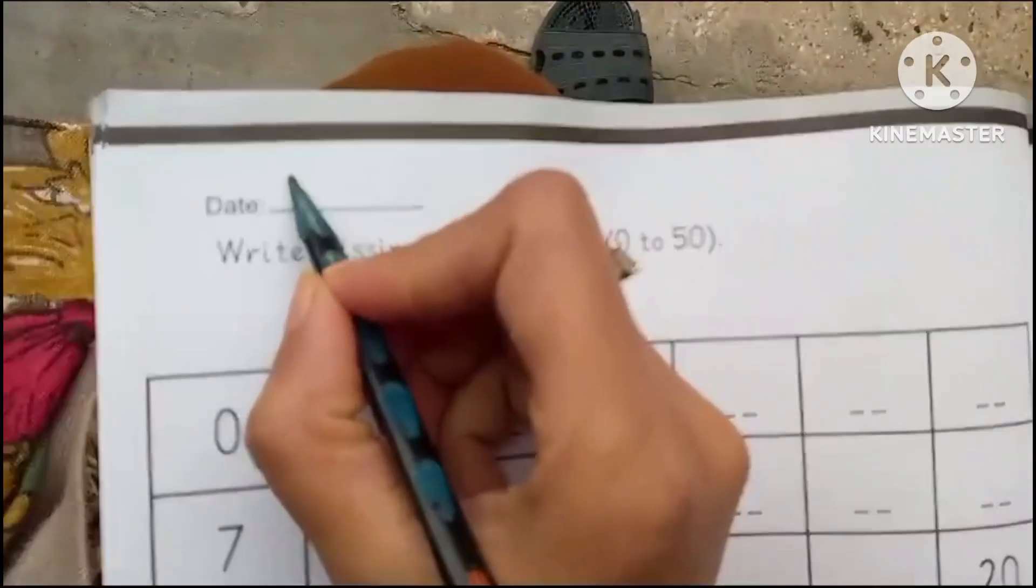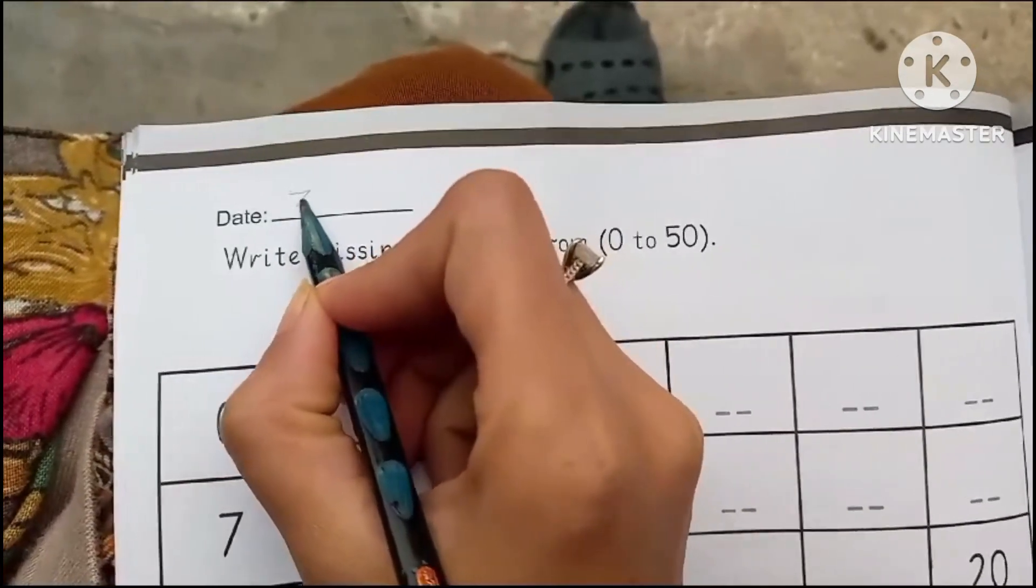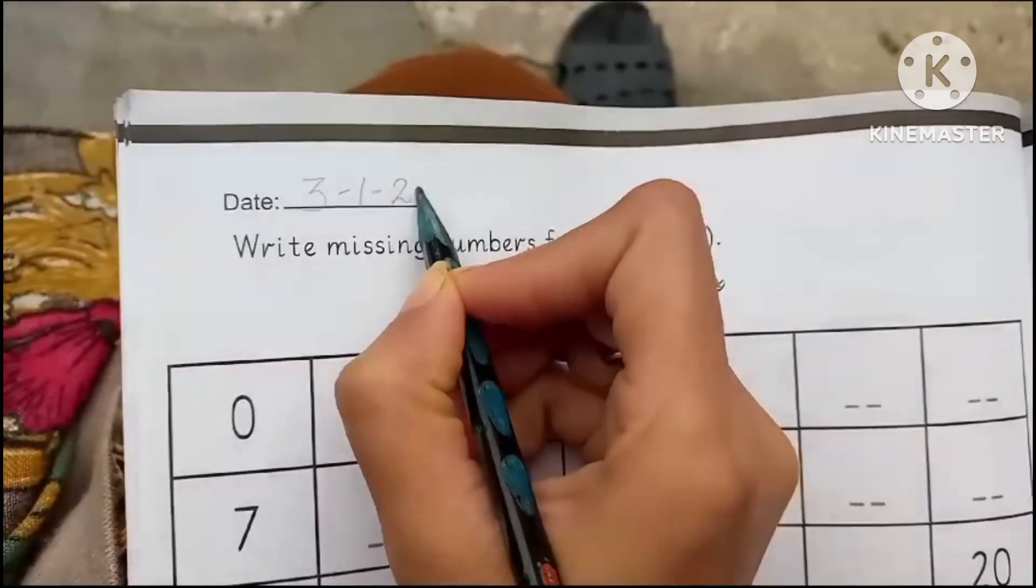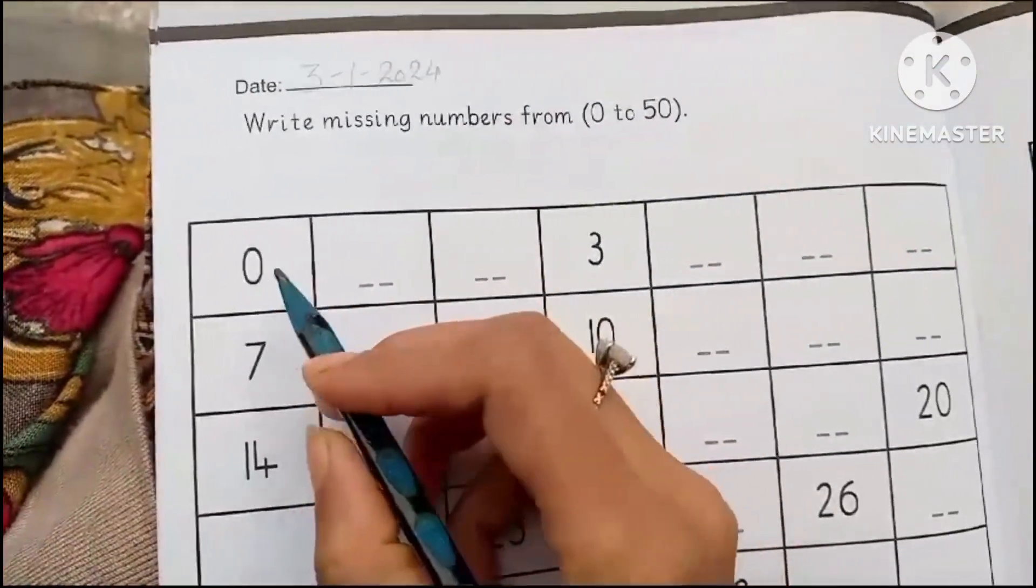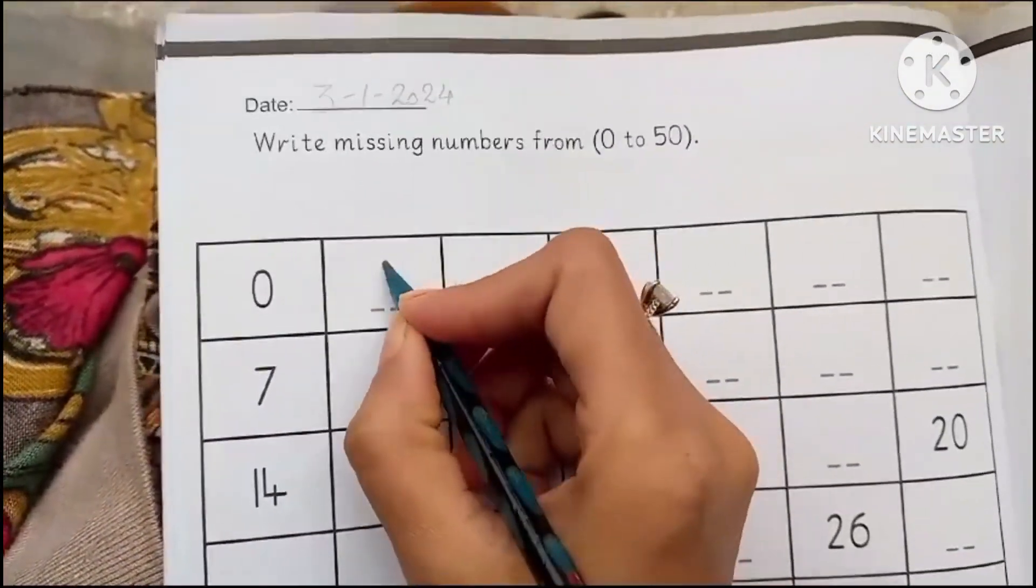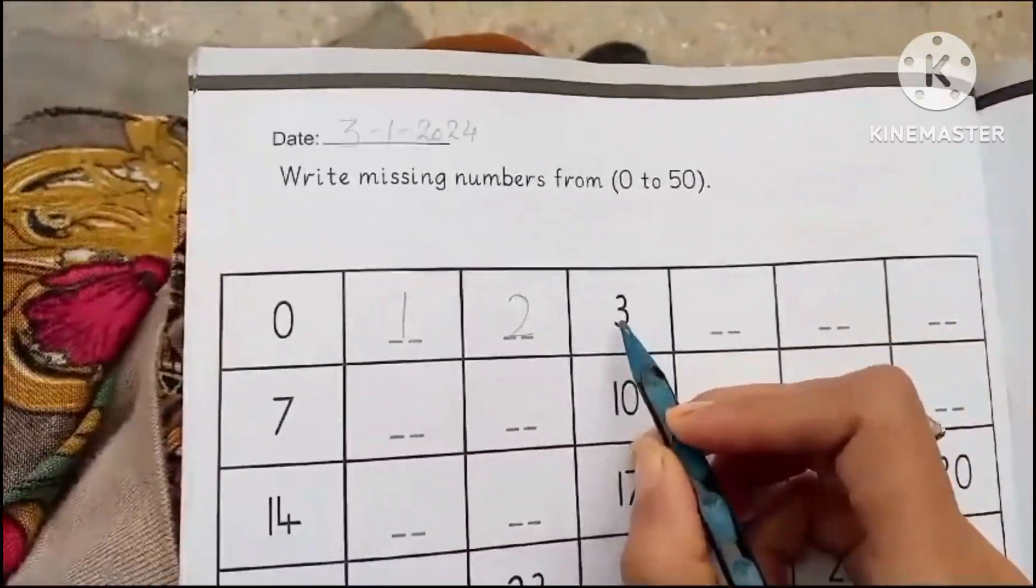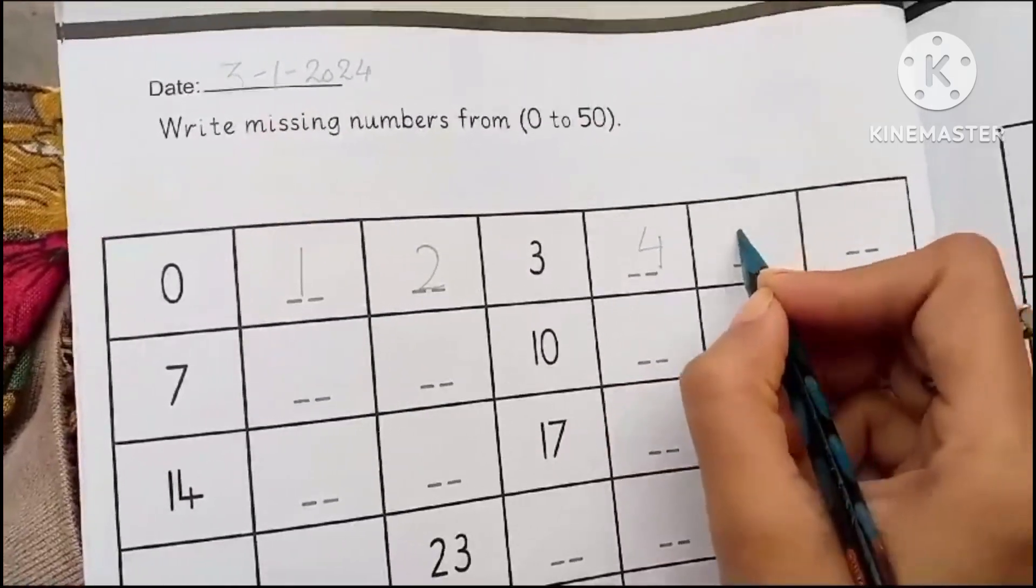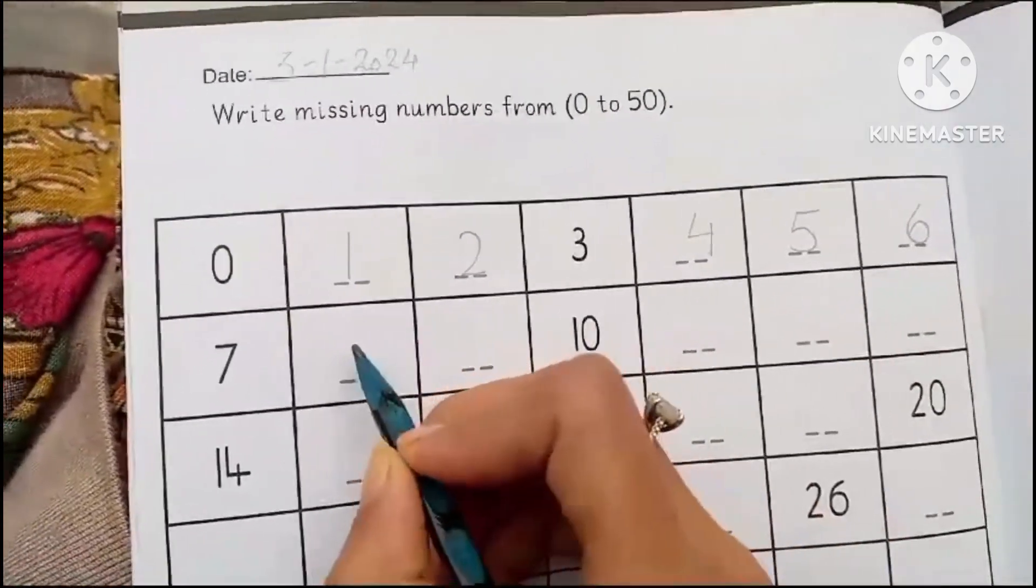The date is 3rd January 2024. Zero. What comes after zero? One, two, three, four, five, six, seven.